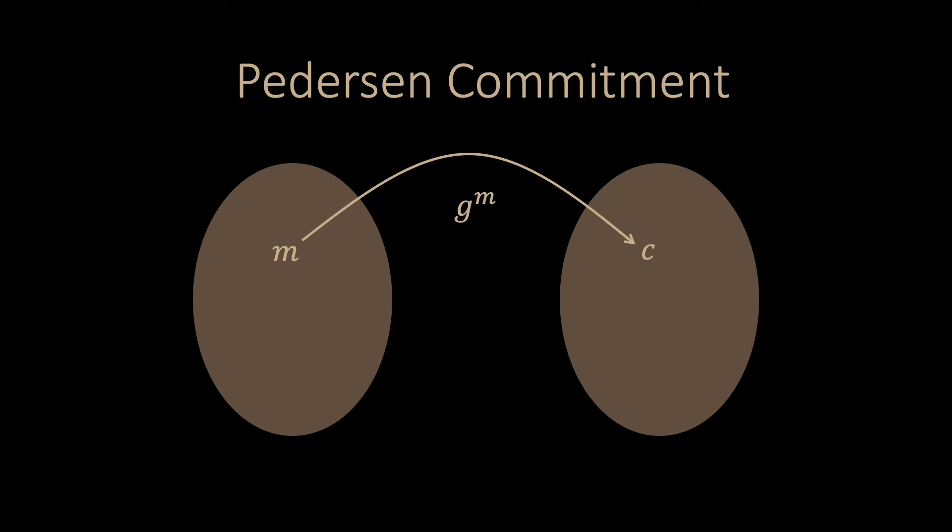The idea is to use the computation g to the power of m in a group and rely on the fact that computing the discrete logarithm is hard. However, similar to the hash function example, we also need a random number in the computation. To do this, Sherlock and Watson agree on a random number y first.